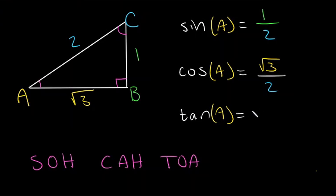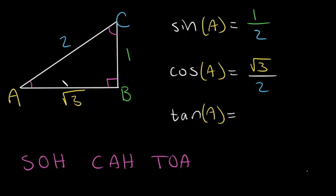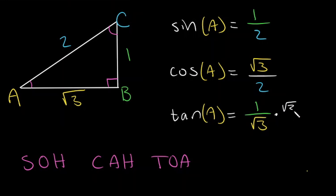Finally, let's look at tangent. Opposite from angle A is 1, divided by the adjacent side, which is the square root of 3. So tangent of A is 1 over the square root of 3, but we need to rationalize this because we don't want a radical in the denominator. So we multiply by square root of 3 over square root of 3, and this will be equal to the square root of 3 over 3. Tangent of A is equal to square root of 3 over 3.